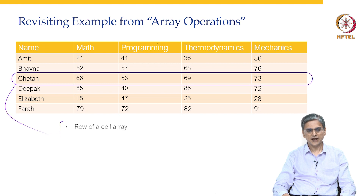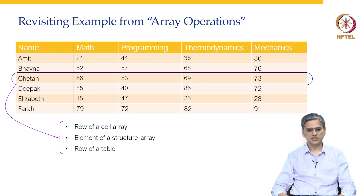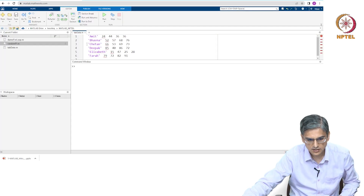So let us look at the third row. This is the data for Chetan. We will now look at how we can represent this as a row of a cell array, or an element of a structure array, or as a row of a table. So let us go on to MATLAB and look at this particular row.